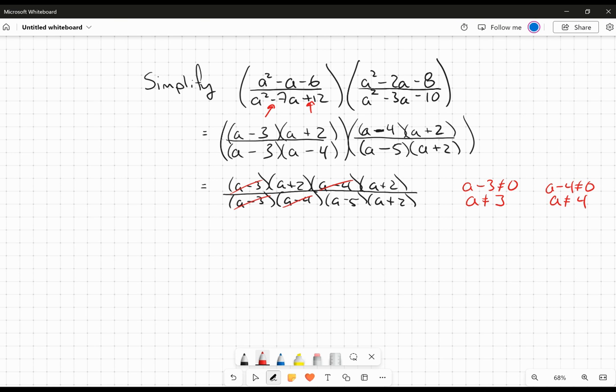And then over here, I've got this a plus 2 canceling with the a plus 2, which means a plus 2 cannot equal 0, which means a cannot equal negative 2. And so at the end here, I'm left with an a plus 2 in the numerator and an a minus 5 in the denominator. But I've got to include with it that fact that a cannot equal 3, 4, or negative 2.